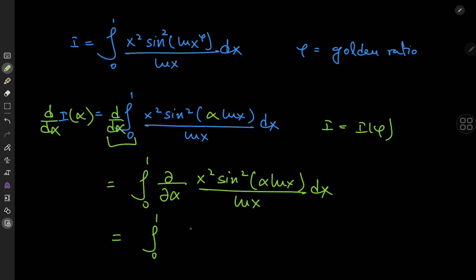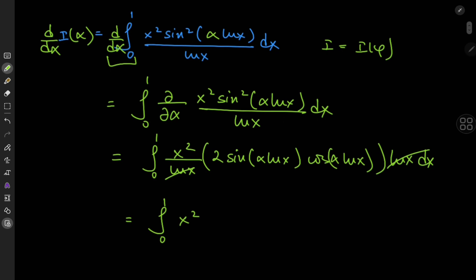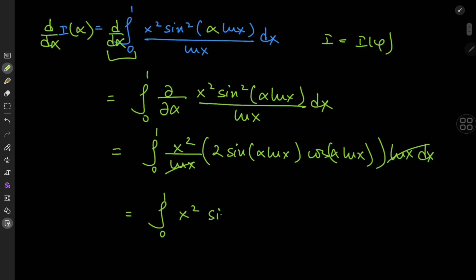So we can write this as the integral from 0 to 1, x squared divided by log x is just a constant in the alpha realm anyway, and differentiating the sine function gives us 2 times sine of alpha log x times the cosine of alpha log x. And all of this because of the chain rule will be multiplied by log x as well. So the log x terms cancel out quite nicely, and what we're left with is 2 sine of something times the cosine of that exact same something. So from trigonometry we know that this is the double angle formula for the sine function. So we have x squared times the sine of twice of alpha log x.